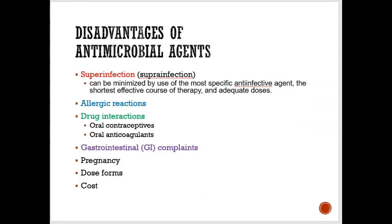There are always going to be some disadvantages with taking antibiotics. One of them is called superinfection. What that means is: let's say you take an antibiotic to treat yourself and it doesn't work. Now you need to take another antibiotic to kill the bacteria. The first dose didn't kill the bacteria, so now you need a second, different type of antibiotic. We want to avoid a superinfection — a second infection.